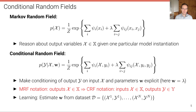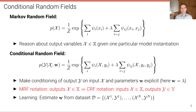In a conditional random field, we make the conditioning of the output on the input and the parameters explicit. Instead of writing just the distribution on x, we write a distribution of y conditioned on x and w, where y is the output — what x was before — and x is the input, such as a noisy image. The model then takes a noisy image x and produces a denoised output y.